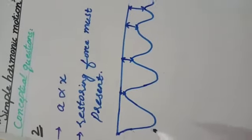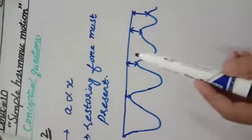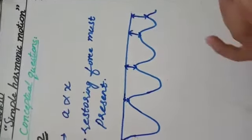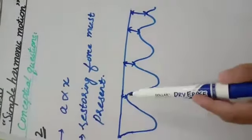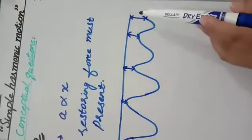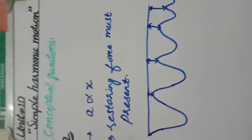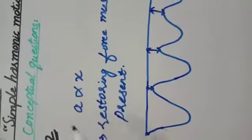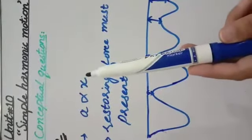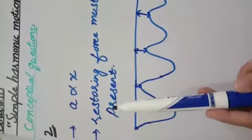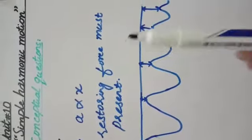If we bounce the ball on the floor, its displacement slowly decreases. The displacement is not the same. Simple harmonic motion has a condition: acceleration must be directly proportional to the displacement, and the second condition is that restoring force is always present.